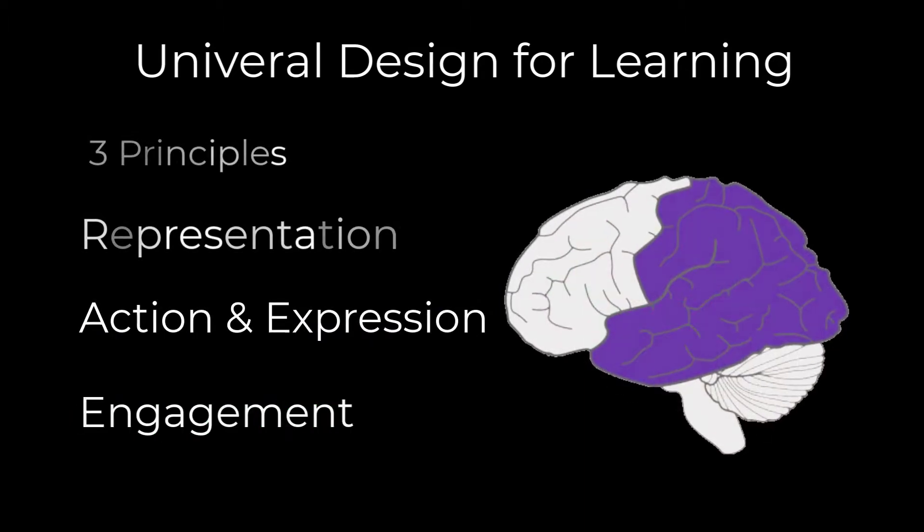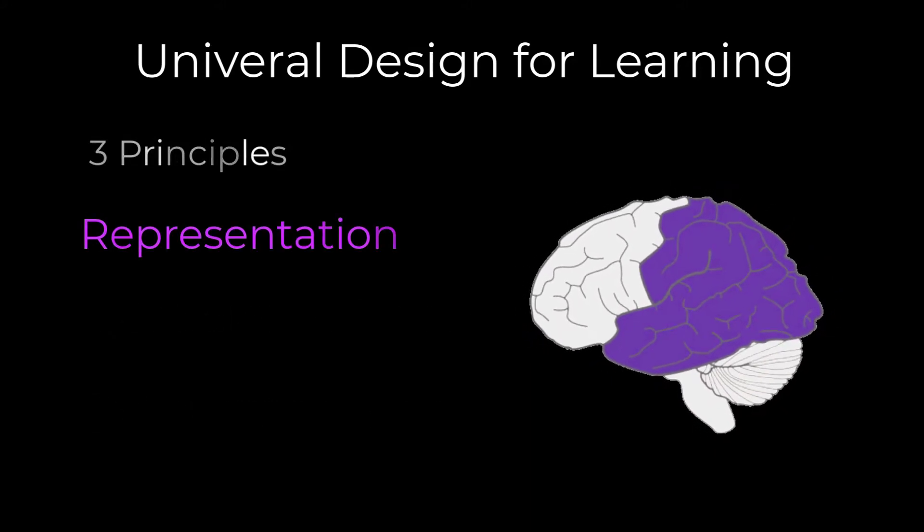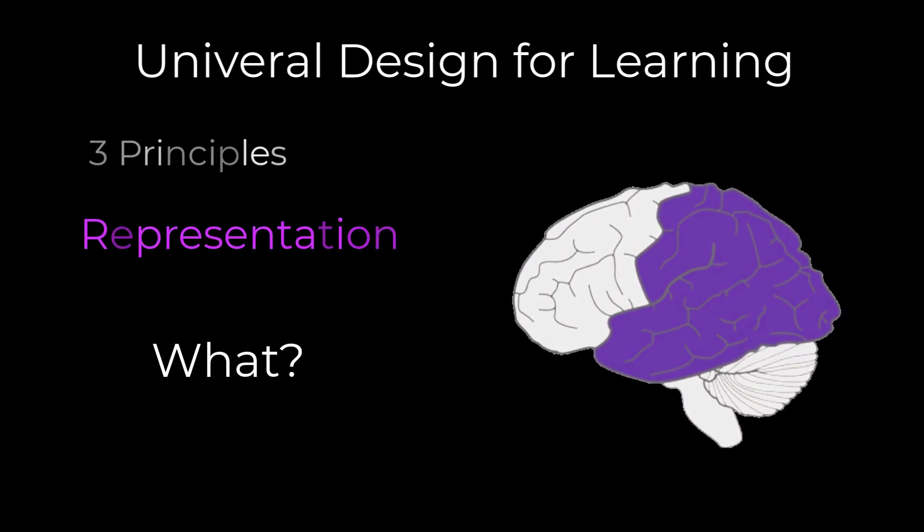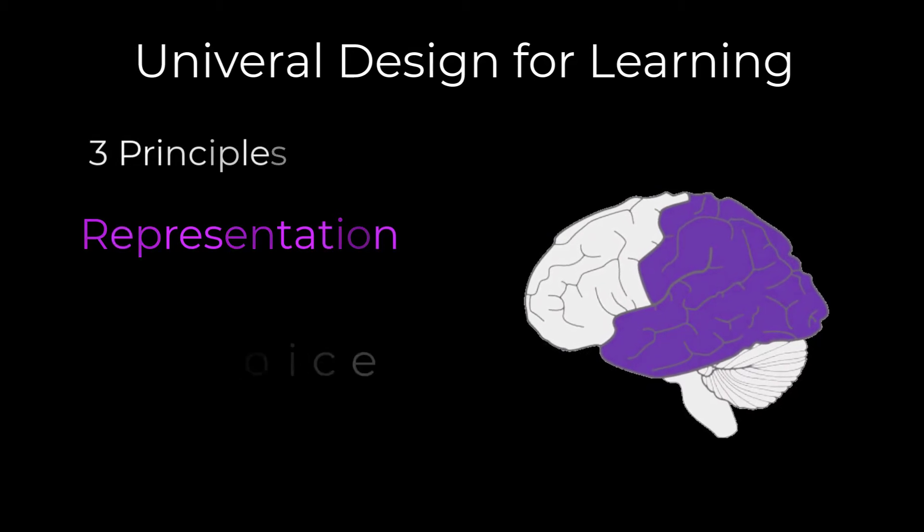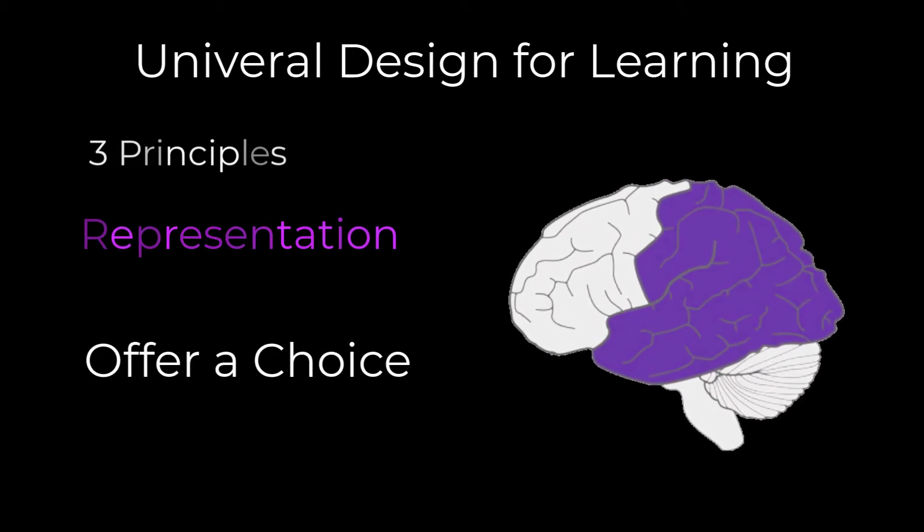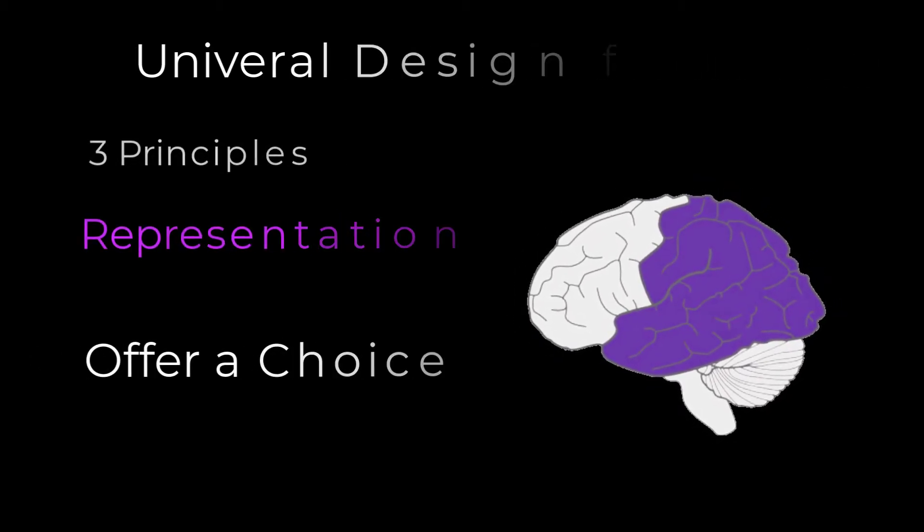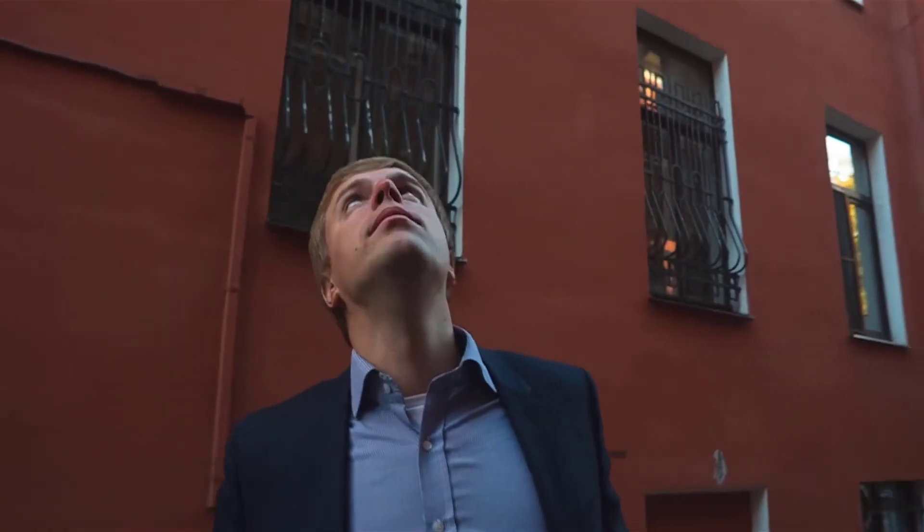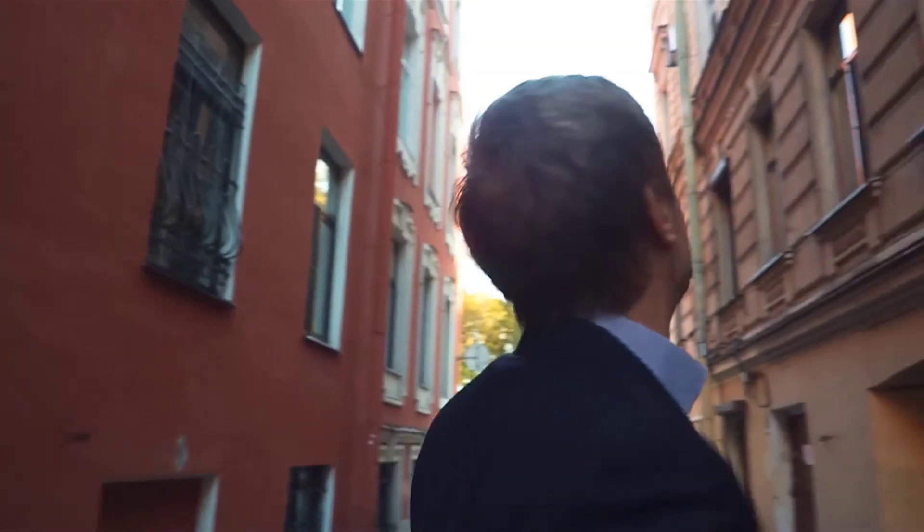The first principle pertains to how we present information to the learner. Essentially, it is about what they are learning. To ensure learning is most successful, offer a choice of multiple presentations of the information. People differ in ways that they perceive and comprehend information. How we present to them matters.